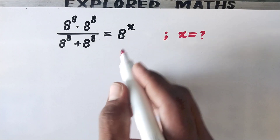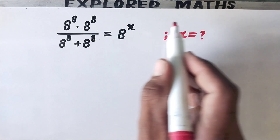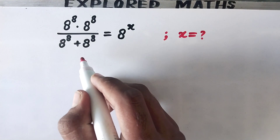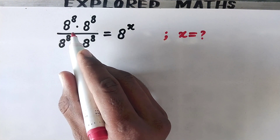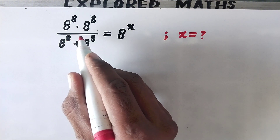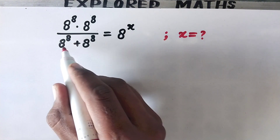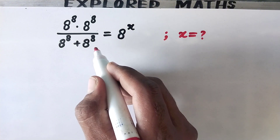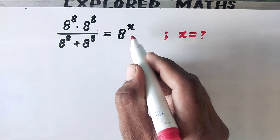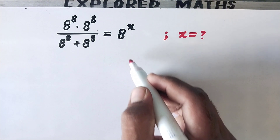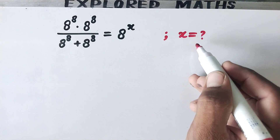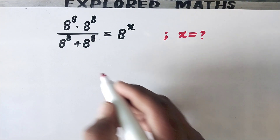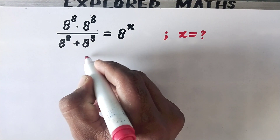Hello everyone and welcome to my channel Explode Maths. In this video we are going to solve 8 to power 8 times 8 to power 8, divided by 8 to power 8 plus 8 to power 8, equals 8 to power x. Then what is the value of x? So let us see its solution.